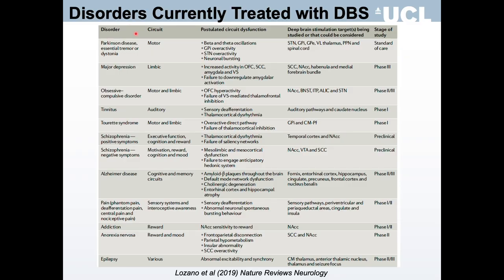The slide shows the widening application of DBS as a treatment for a range of neurological and psychiatric disorders. In movement disorders such as Parkinson's disease, essential tremor, and dystonia, DBS is considered standard of care. For other neurological and psychiatric disorders, DBS is considered more or less experimental, with pre-clinical Phase 1, Phase 2, and Phase 3 trials in progress.